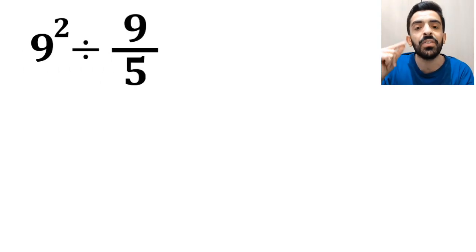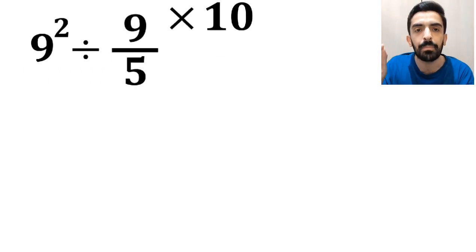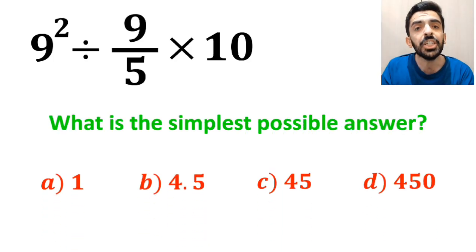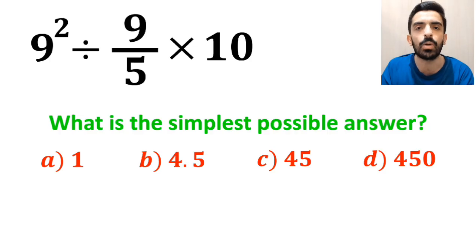If we have the expression 9 to the power of 2 divided by 9 over 5 multiplied by 10, then what is the simplest possible answer for this expression? Which option do you think is the correct answer to this question?